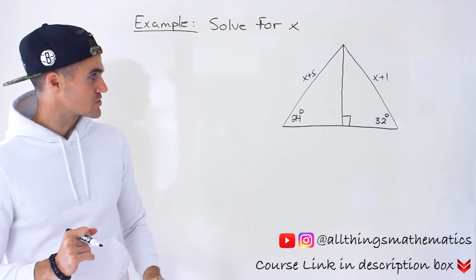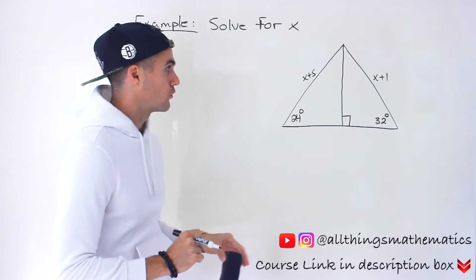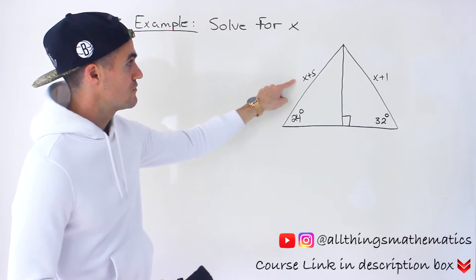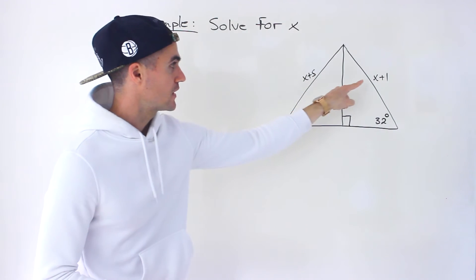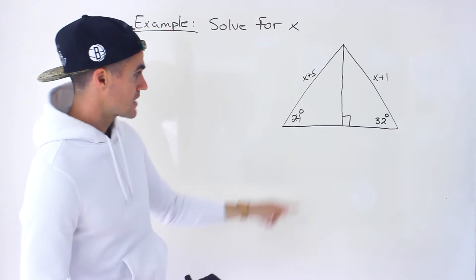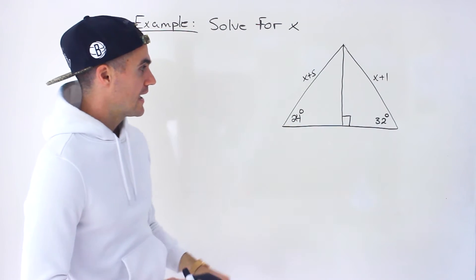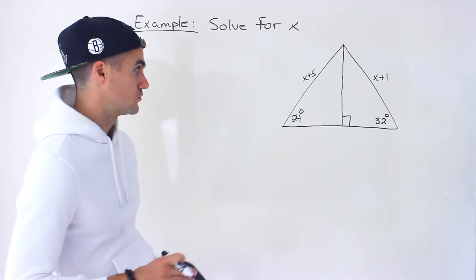So what we got to do is solve for x in this diagram over here. We have x plus 5 representing this side and then we have x plus 1 representing that side. We got an angle of 24 degrees, an angle of 32 degrees.